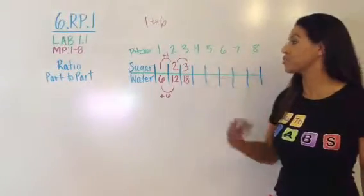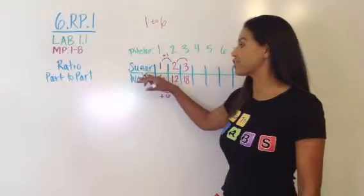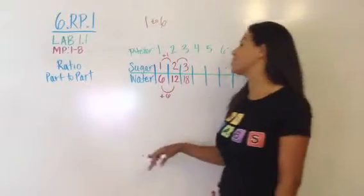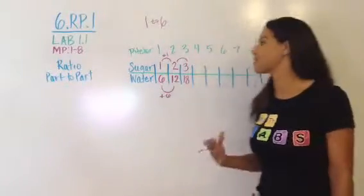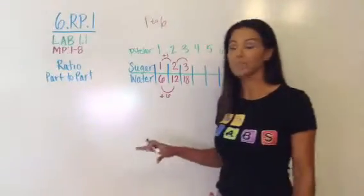In part B, you're going to look at the ratio of, instead of sugar to water, you're going to look at the ratio of sugar to lemon and even lemon to water. Because remember, there were five lemons that were part of this recipe as well.